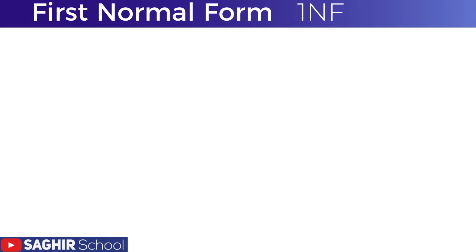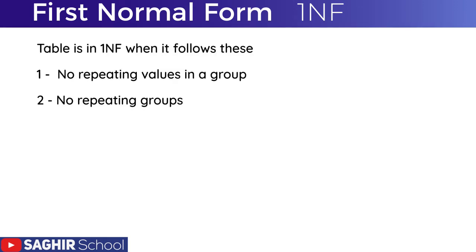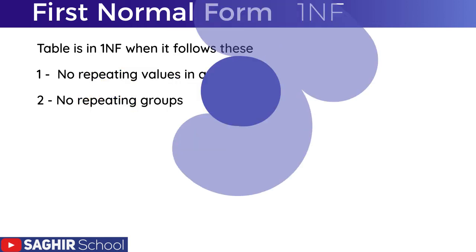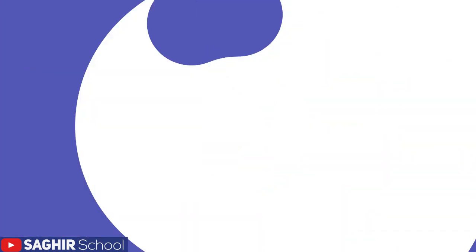For a table to be in First Normal Form, it needs to meet two criteria — two things that should not happen in the table: first, no repeating values in a group, and second, no repeating groups in the table. We'll see what that means in the example.